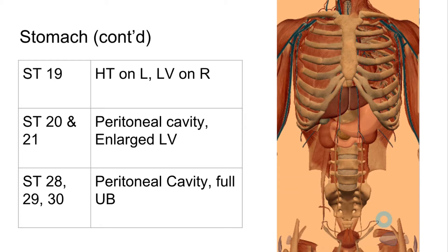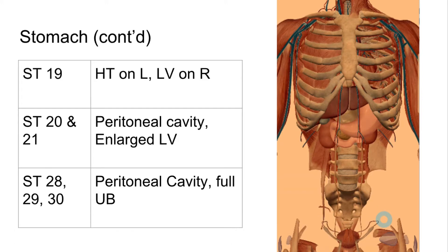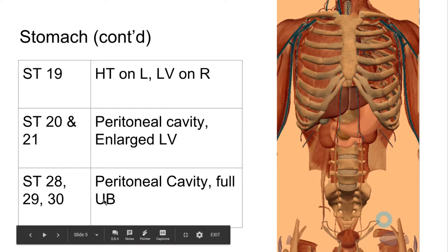Stomach 28 is in the lower abdomen, 2 cun lateral to the midline and 3 cun inferior to the umbilicus, level with REN4. Deep needling here can penetrate a full bladder. The same applies to Stomach 29 and Stomach 30.